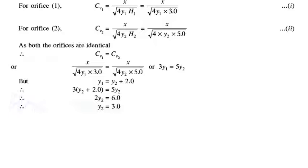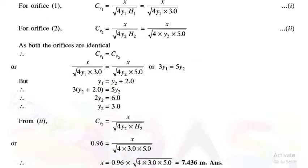Equating both equations gives 3·y1 = 5·y2. We also know y1 = y2 + 2, so substituting: 3·(y2 + 2) = 5·y2, which gives y2 = 3. Since y2 = 3 and CV2 = 0.96, we can solve for x. Substituting all known quantities into the CV equation gives x = 7.436 meters.